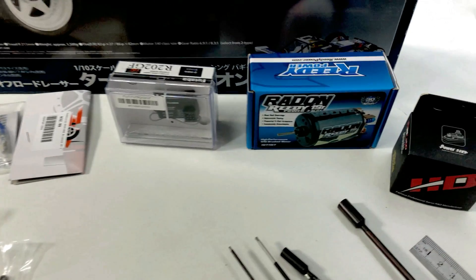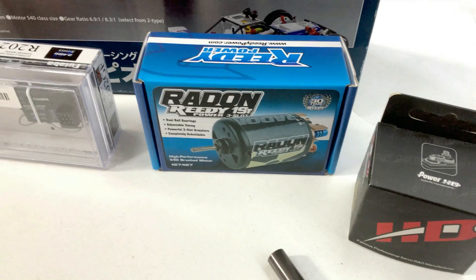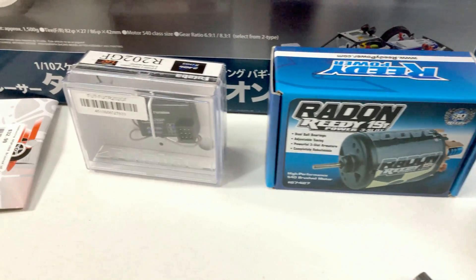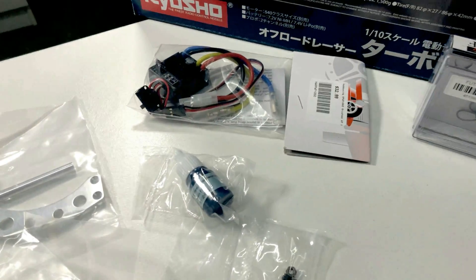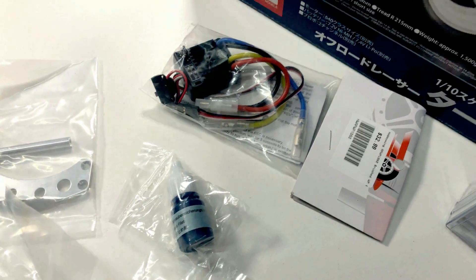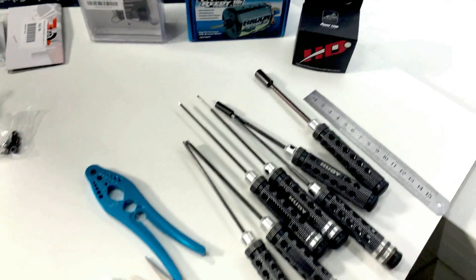So for the servo I'll be using a Power HD HD 3001 HB servo, a nice Reedy Raiden 19 turn motor, a Futaba R202GF receiver and a Hobbywing 1060 brushed ESC. Got all the parts laid out there, ready to go. Let's get into it.